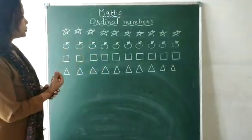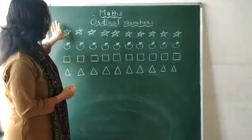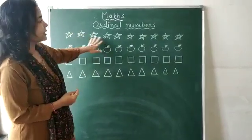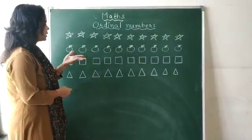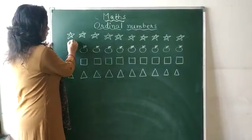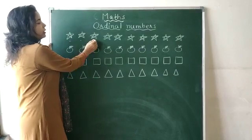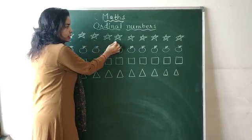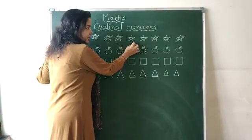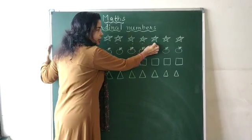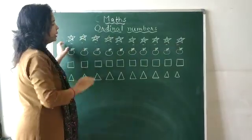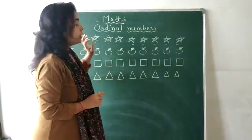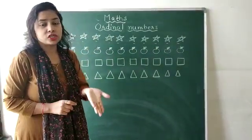So, I will draw 10 stars here. Okay? And if I will count, start counting then 1st, 2nd, 3rd, 4th, 5th, 6th, 7th, 8th, 9th, 10th. Okay? So yes, ordinal numbers are about positions. Right?